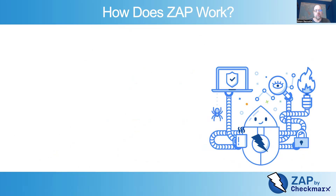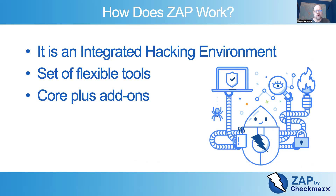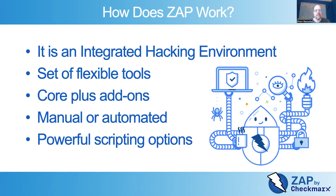So how does Zap actually work? Zap is really kind of like an integrated hacking environment, similar to an integrated development environment. It is a set of very flexible tools that can do lots of different things. Zap has a core and then a load of add-ons, some of which are included by default and some of which you can add via the Zap marketplace. All of these add-ons are of course free and open source. You can run Zap in manual mode or you can automate it. And it has some very powerful scripting options — probably more powerful than any of the commercial tools out there.